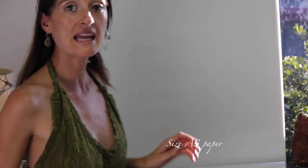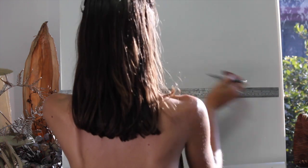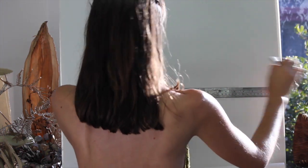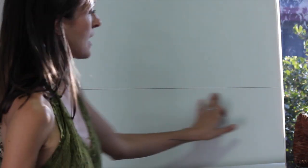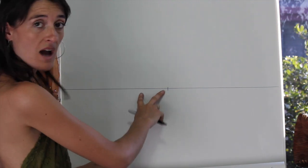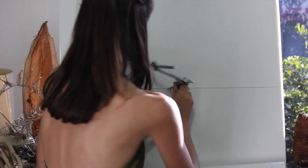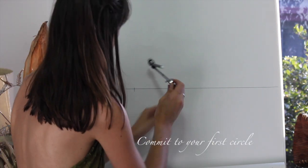Okay, so preferably let's work in size A3 paper and we're going to work with a 4.5 centimeter radius. Let's start with a horizon in the middle of the page. Grab our center point and measure out from that center point 4.5 centimeters. You should have two marks on your page. Once you have your two marks, let's commit to our first circle in the center of the page.